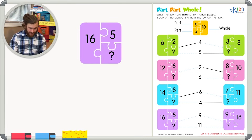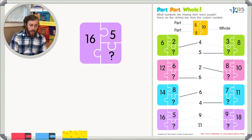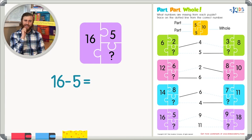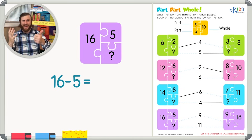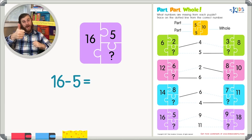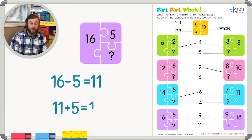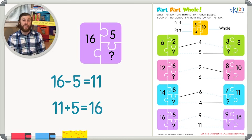We have 16 as our whole number and five as our first part. To figure out the missing part, we'll subtract 16 minus five. This is a tricky subtraction problem, so let's count backwards: 16, 15, 14, 13, 12, 11, 10, 9, 8, 7, 6, 5 — we counted all the way up to 11. So I think 11 is our missing number. Let's add 11 plus 5, and that in fact does equal 16. So we know that our missing number is 11.